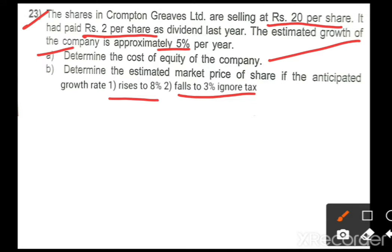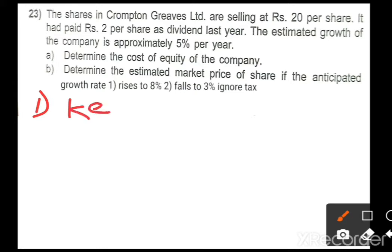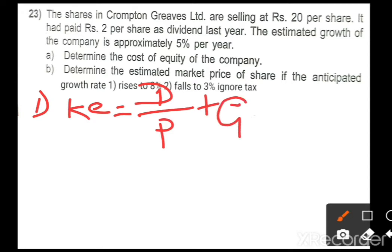Based on the given information, we will calculate: first, cost of equity; second, market price. Let's start with number one — calculation of cost of equity. The formula is: Ke = D divided by P, plus growth rate (g).